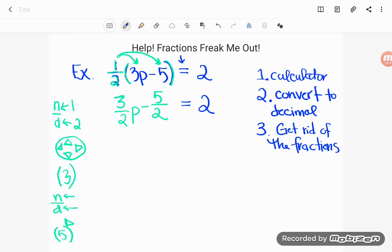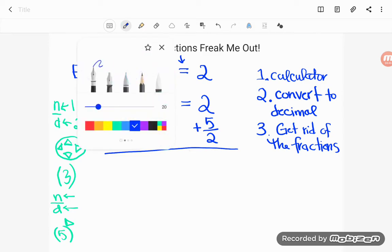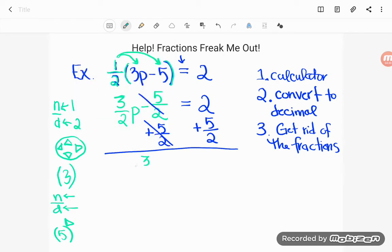My P is not alone yet. And so what I'm going to do now that I've simplified, I did the multiplication I saw, is to work to get the letter alone. So remember when we're solving, we work the order of operations backwards. So move anything that's adding or subtracting first. That five halves is subtracting with P. So I'll add it to both sides. On this side, subtracting five halves and adding five halves are opposites. They'll cancel. I've got three halves P left on this side.